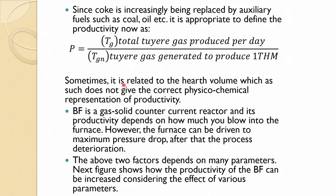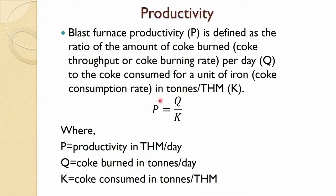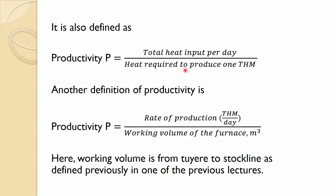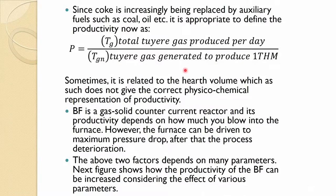Sometimes productivity is also related to hearth volume, but this does not give the correct physico-chemical representation. There are many ways by which furnace productivity can be defined. Mostly, the coke-burning definition is a good one, but since coke is increasingly being replaced by PCI fuel, the tuyere gas definition would also be a good way to define productivity.